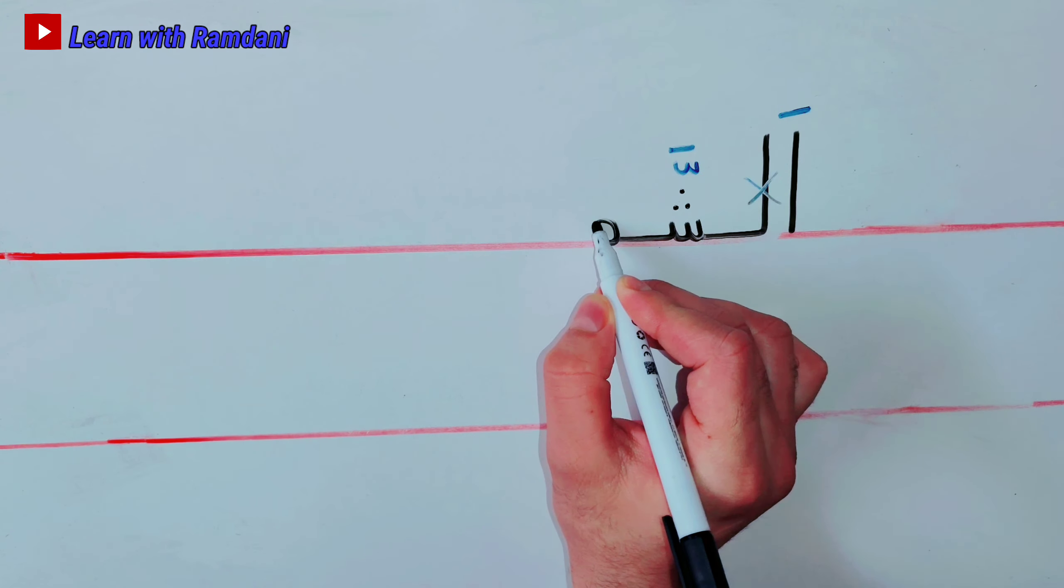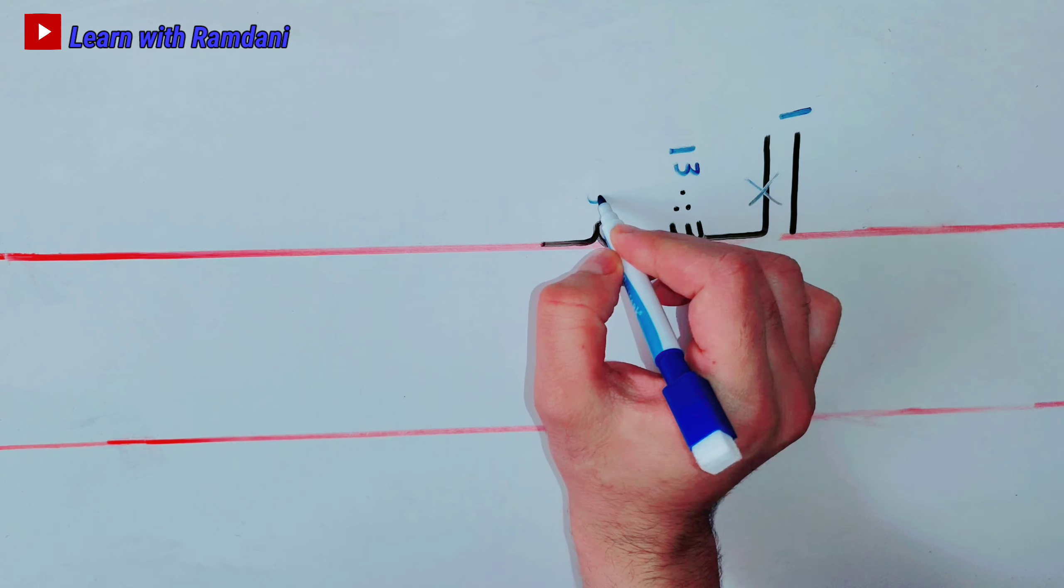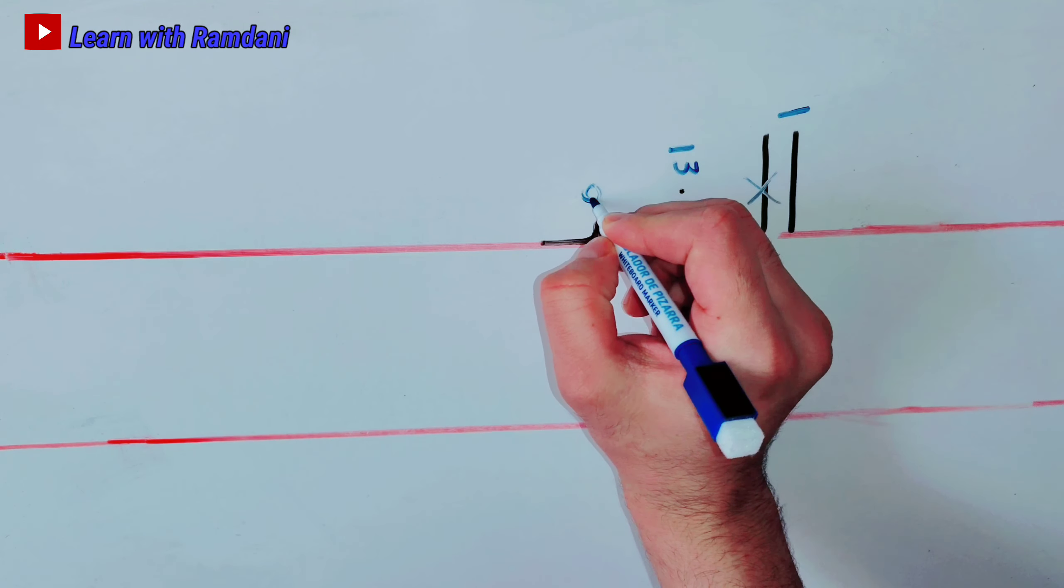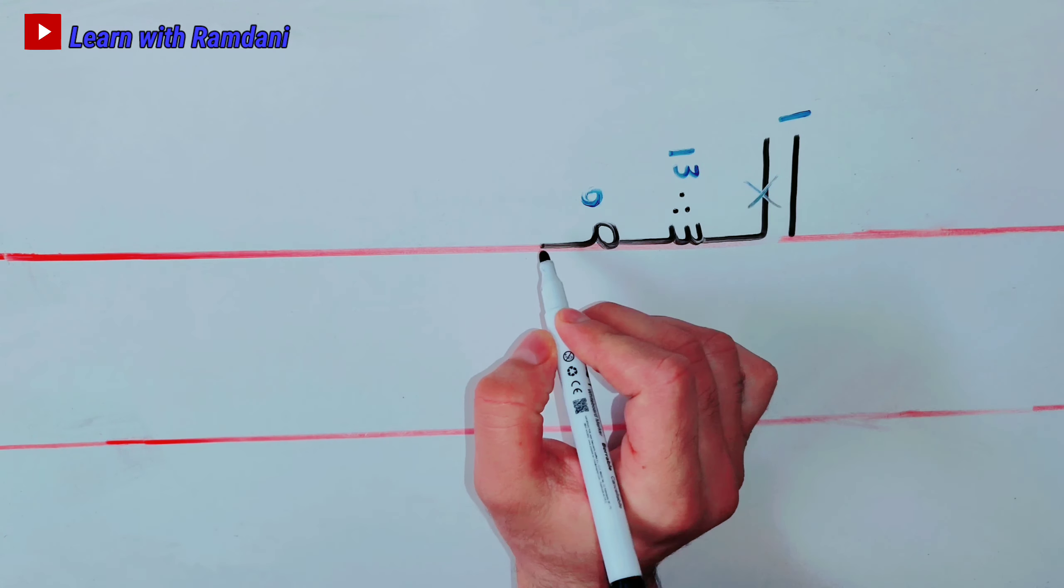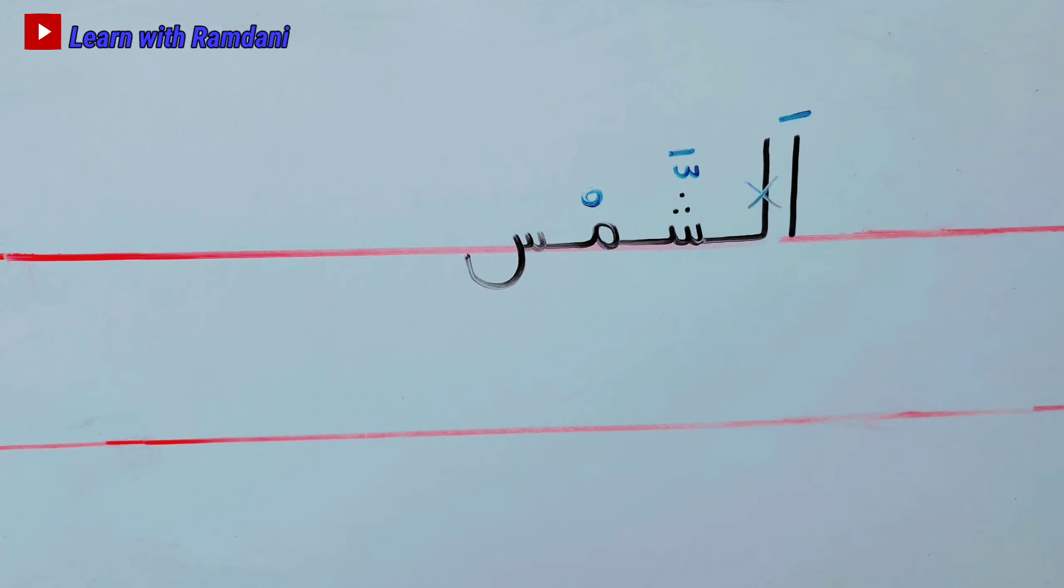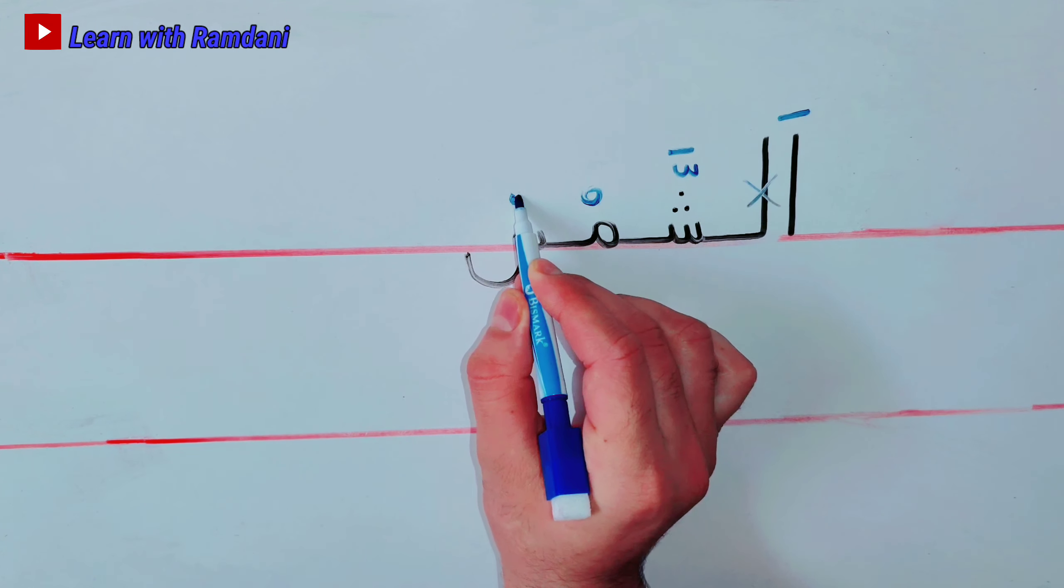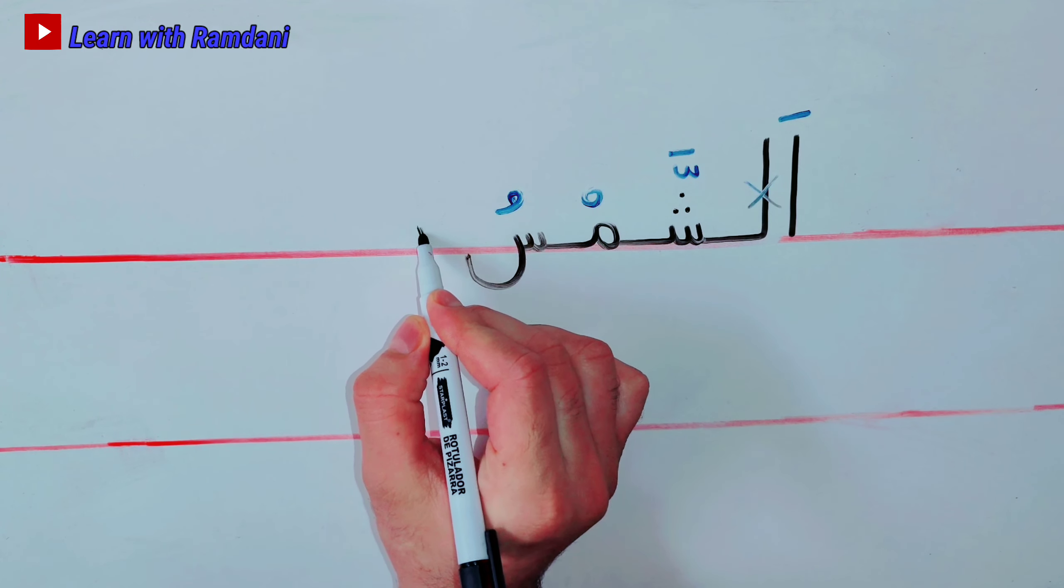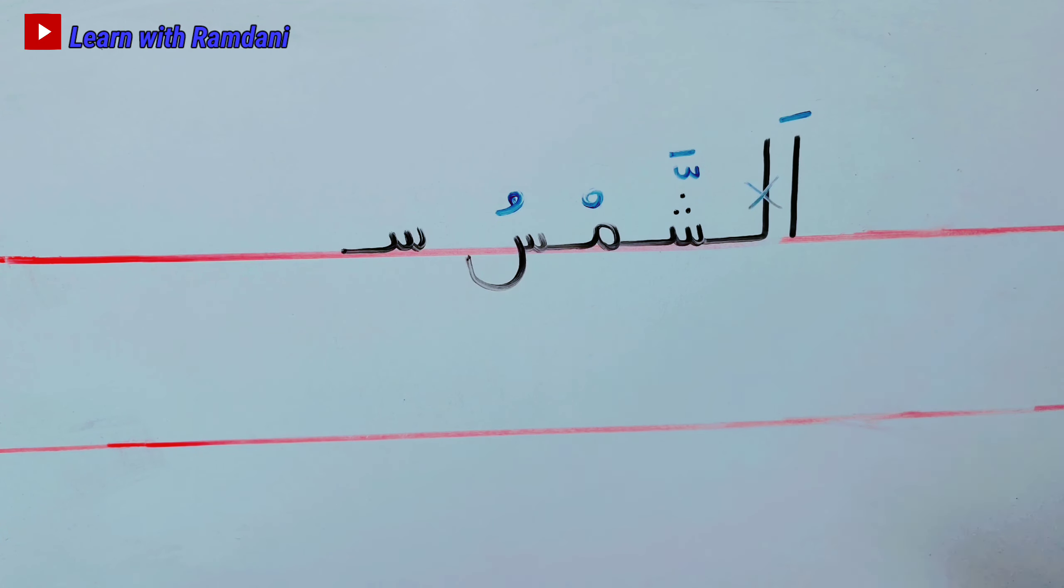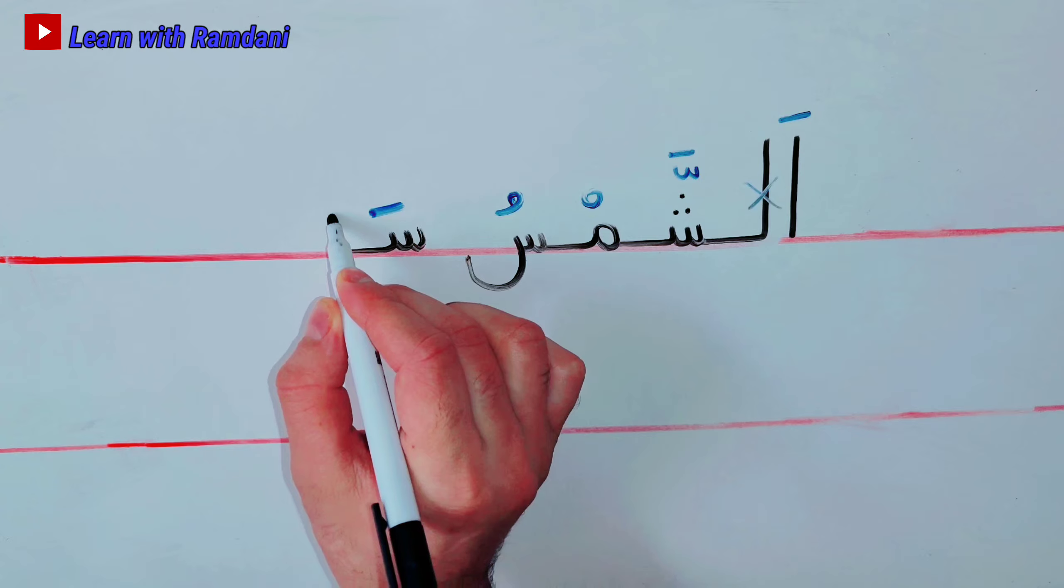And the next letter, letter meem. As-sha, al-sham-sha. Now the letter seen again. We put fatha on the top. And then we'll put a long vowel, alif.